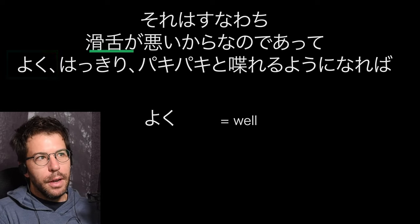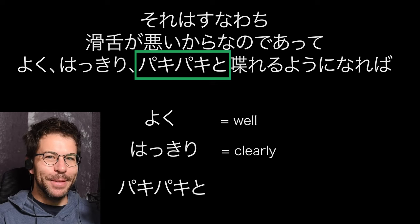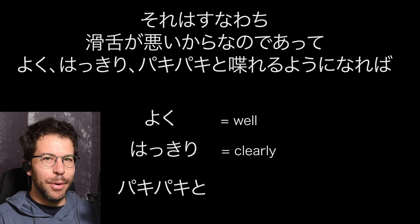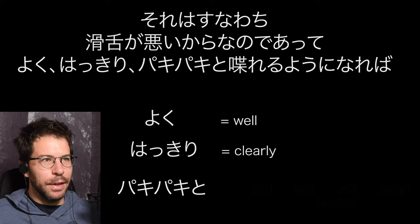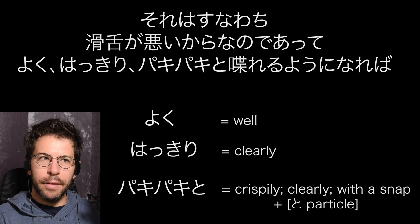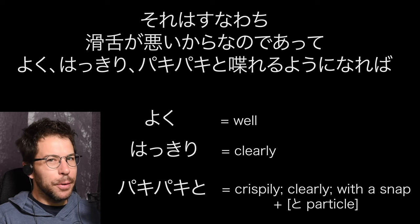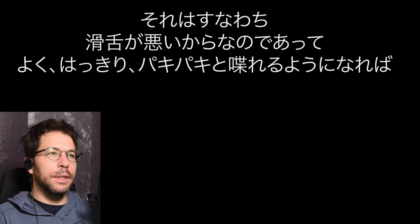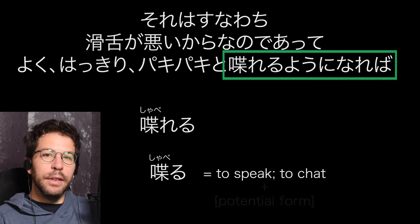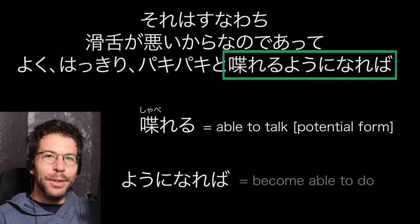She says よく, meaning 'well,' and はっきり meaning 'clearly,' and then ぱきぱき — I love this word. There are so many onomatopoeic words in Japanese. You can imagine ぱきぱき as the sound of stepping on dry branches — they're crisp, crunching, crackling, snapping. She's talking about having clear distinction between each kana that you're saying, so it makes sense that they would be crisp and clear.